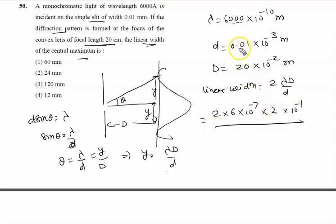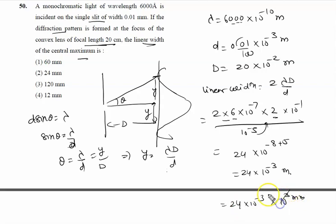Upon small d, 0.01, so that's 10 raised to the power minus 5. Finally it is 2 x 6 x 2 into 10 raised to the power minus 7, minus 1, minus minus 5, which gives 24 into 10 raised to the power minus 3 meter, equal to 24 millimeter.